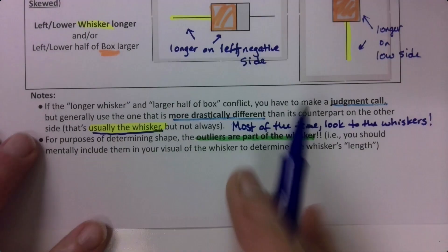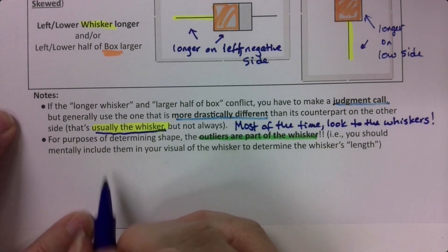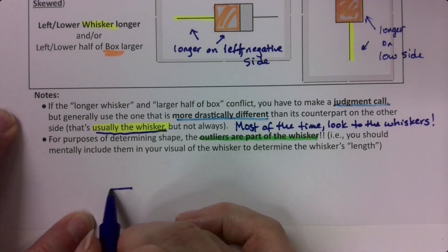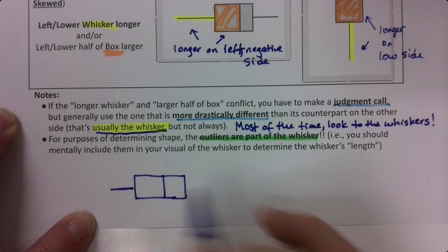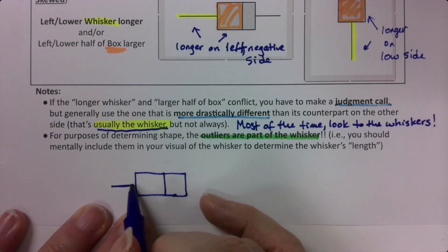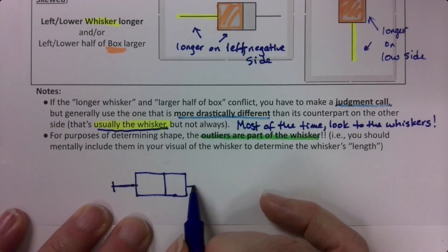if you have a data set that has short whiskers, you're thinking, oh, it's going to be skewed left if that box on that left side is bigger. And then I do this,